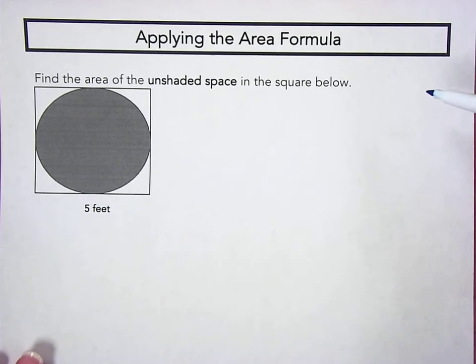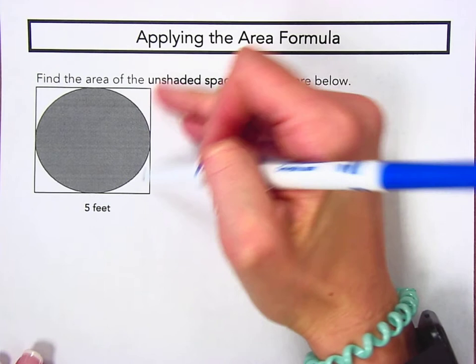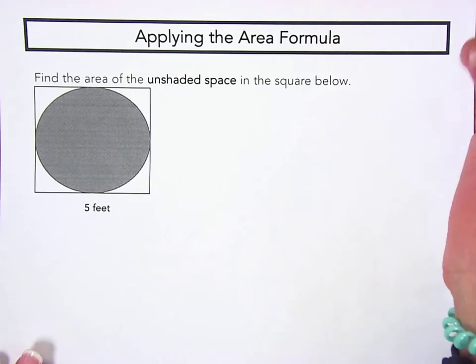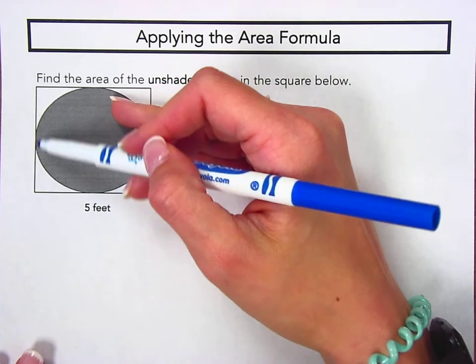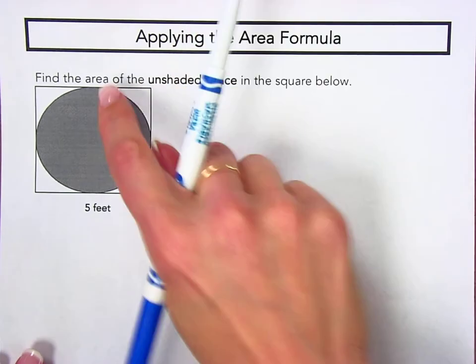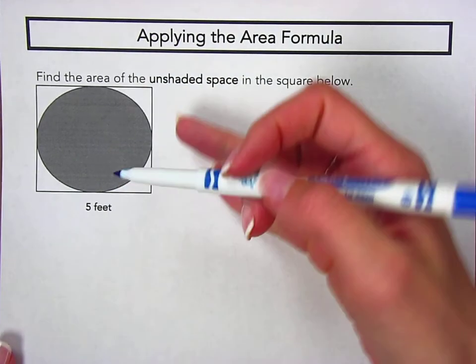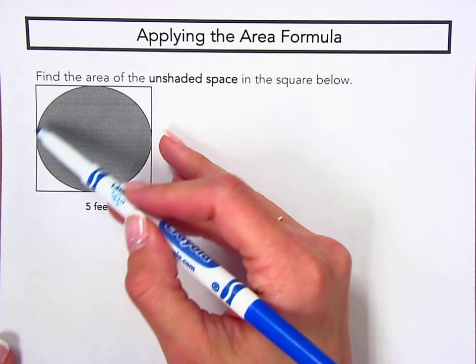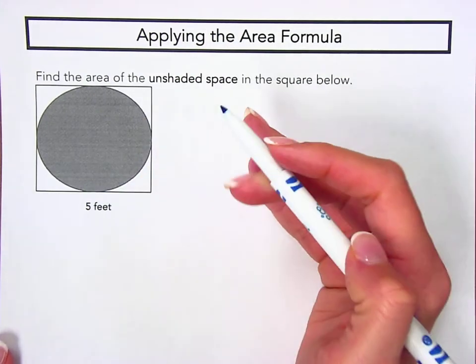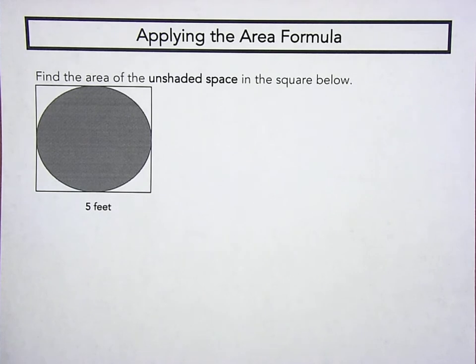Essentially what we're asking here is to find the area of these spaces. Because this area is the area of the square with a circle cut out of it, this is really the area of the square minus the area that the circle takes up. So, in order to find the area of the unshaded space, we need to find two things first: the area of the square and the area of the circle.